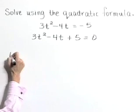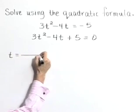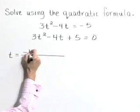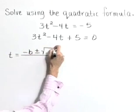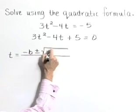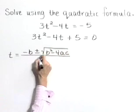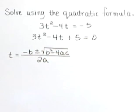I'm going to write down the quadratic formula. t is equal to negative b plus or minus the square root of b squared minus 4ac all over 2a.